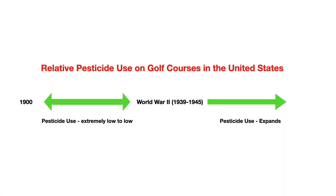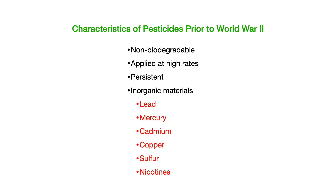Pesticide use on golf courses in the United States can be divided into two general eras. Very few pesticides were used prior to World War II, and then after World War II into the 1960s, there was a large growth in the number of plant protectants used. Many of the pesticides used from the 1920s to 1960 were characterized as non-biodegradable, applied at high rates, persistent, and for inorganic materials containing compounds like arsenic, lead, mercury, cadmium, copper, sulfur, or nicotines.